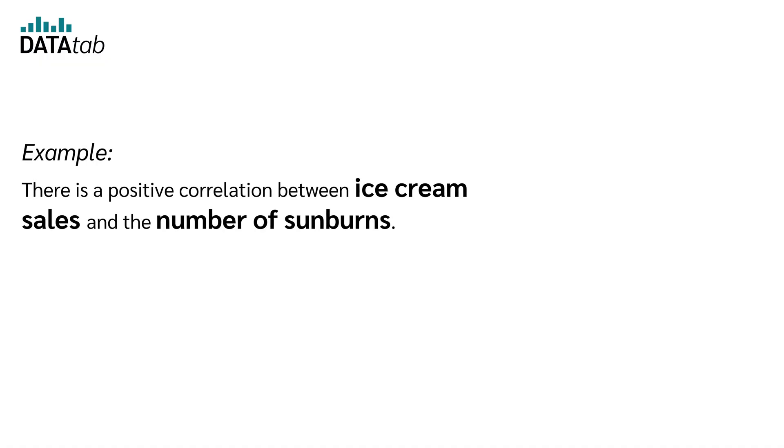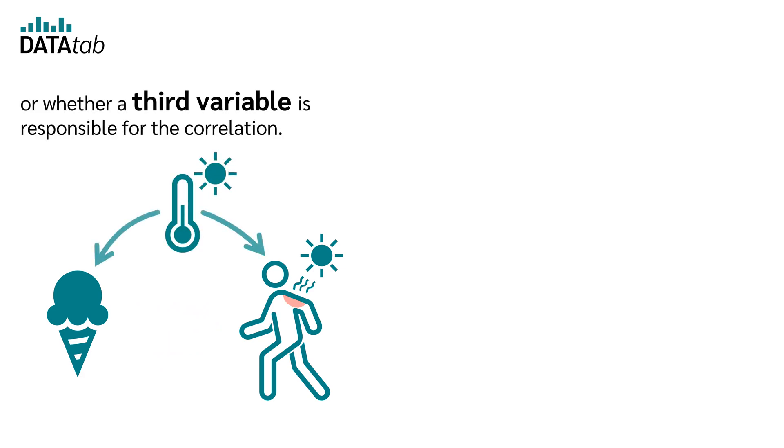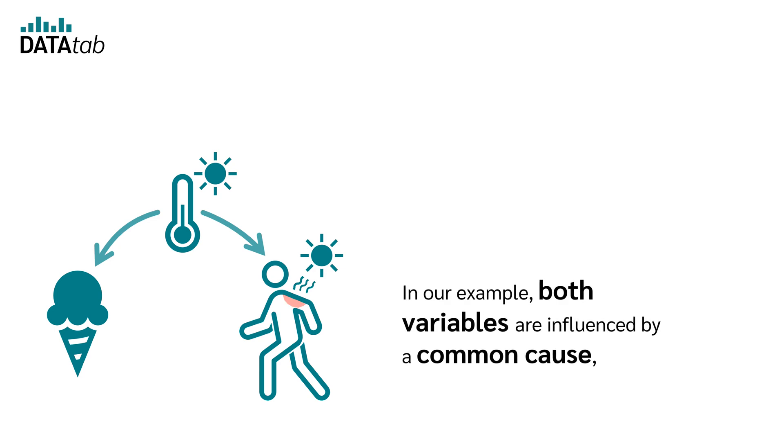Example. There is a positive correlation between ice cream sales and a number of sunburns. However, an existing correlation cannot tell us which variable influences which or whether a third variable is responsible for the correlation. In our example, both variables are influenced by a common cause, namely sunny weather.